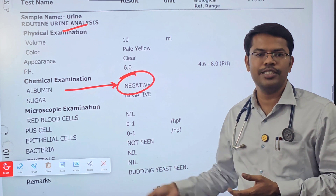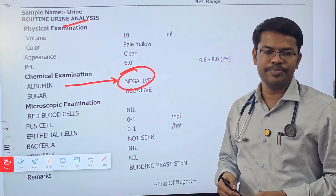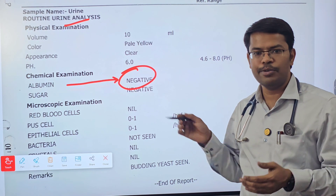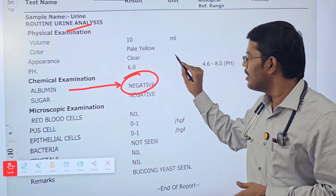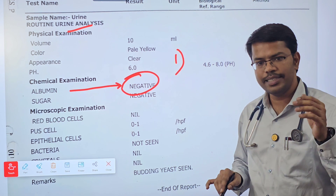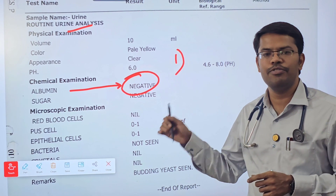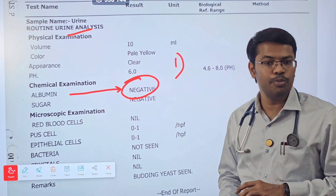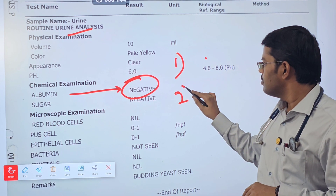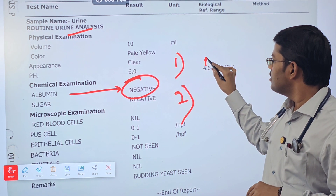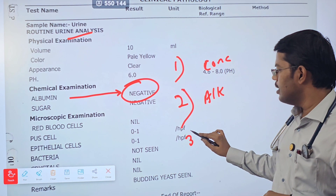False positives are very common in the ward. Whenever there is a highly concentrated urine — the patient is dehydrated and you send a highly concentrated sample — it might be falsely high, showing 2+ or 3+. Less concentrated urine is the second scenario. Highly alkaline urine can also cause false positives.